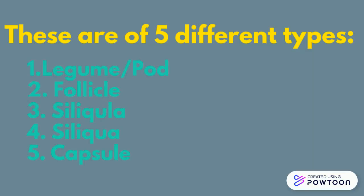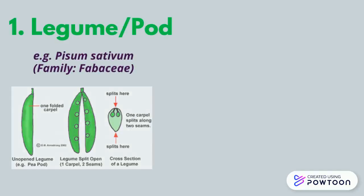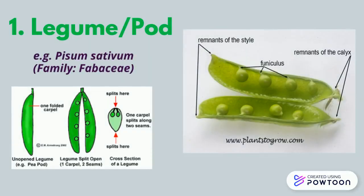Five different types of simple, dry and dehiscent fruits are: legume, follicle, silicula, siliqua and capsule. A legume or pod is a unilocular superior fruit which splits up at maturity along both dorsal and ventral sutures.